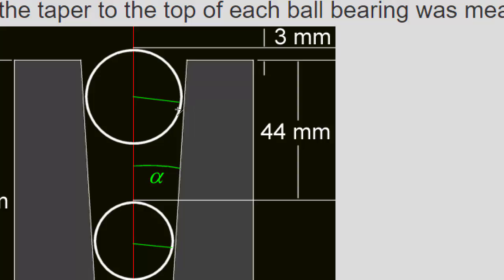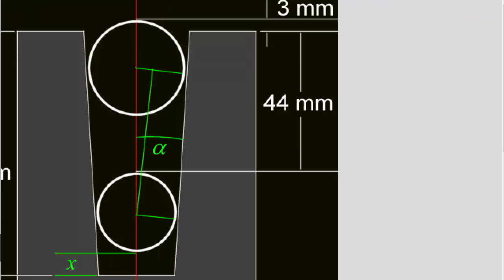These angles in here are right angles because the side of the wall is tangent to the ball bearings at those points. Now we can draw a line from the centre of the lower ball up to there. So the radius of the lower ball is 10 millimeters, and the radius of the upper one is 12.5.